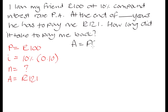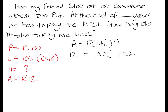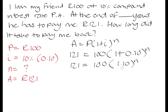Let's plug what we know into the compound interest formula: A = P times (1 + i) to the power of n. We have 121 = 100 times (1 + 0.10) to the power of n. Simplifying the bracket gives 100 times 1.10 to the power of n. Since we're solving for n, we divide both sides by 100, giving us 121 over 100 = 1.10 to the power of n.